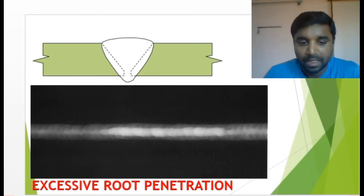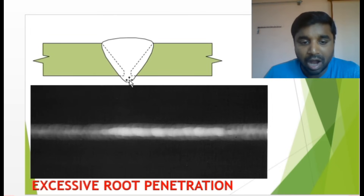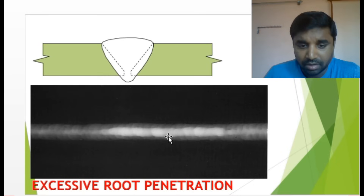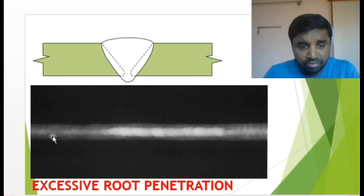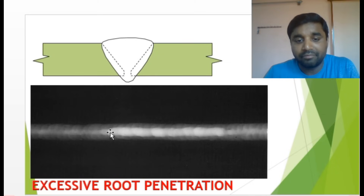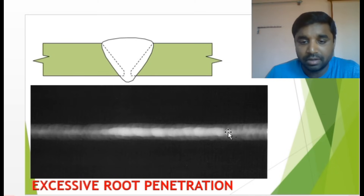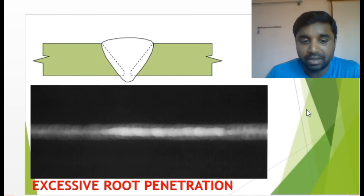Excessive root penetration — penetration is there but it is more than the requirement. In the radiograph, you can see a white line coming along the axis. Some areas may be good with no excessive root penetration, and then starting from a certain point it becomes excessive. That is how excessive root penetration looks in a radiograph image.